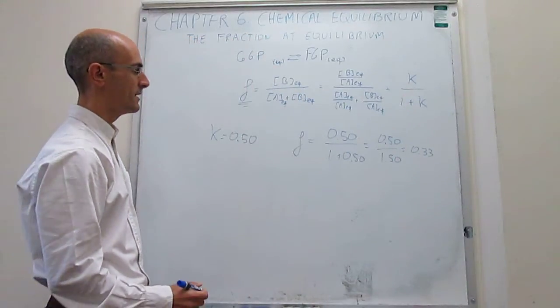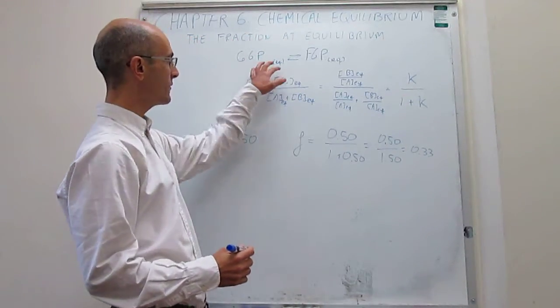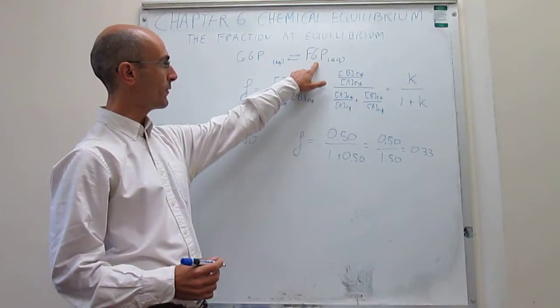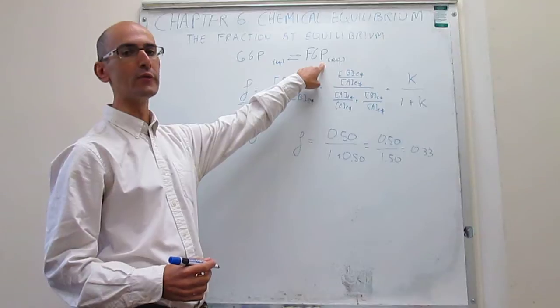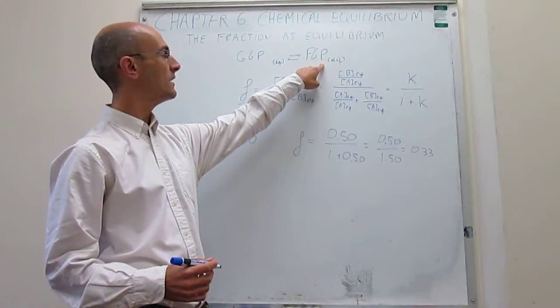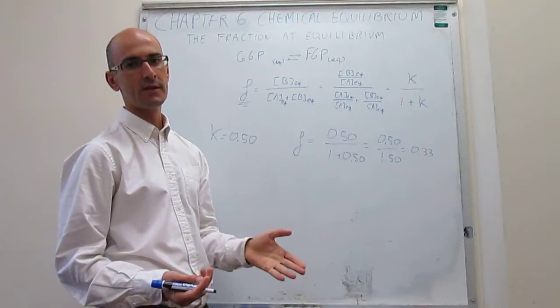So what that tells you is that when you start the reaction, the proportion of fructose-6-phosphate in the reaction mixture is only going to be 33%. The rest is actually going to be glucose-6-phosphate.